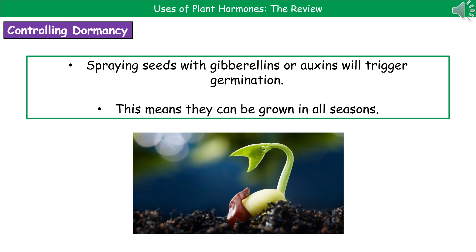The last use of hormones is in controlling the dormancy of seeds. If we want seeds to germinate when they wouldn't normally, we can just spray those seeds with gibberellins or auxins, which then triggers the process of germination. This means we can now grow plants throughout the whole year, rather than waiting for that natural dormancy cycle to break — we can break it whenever we want.